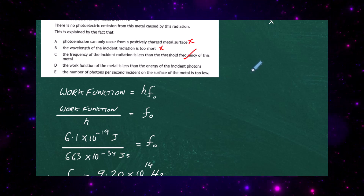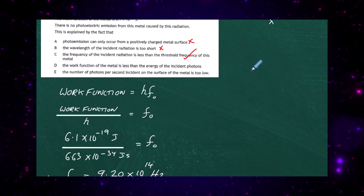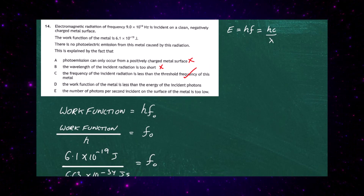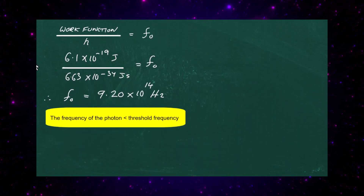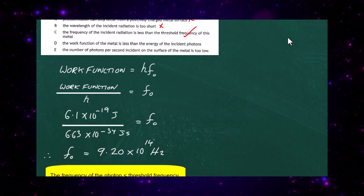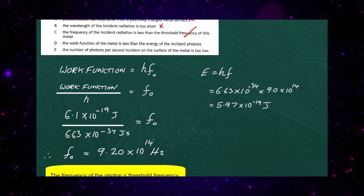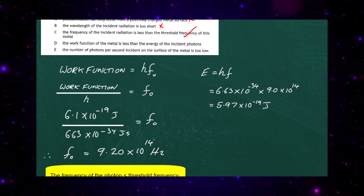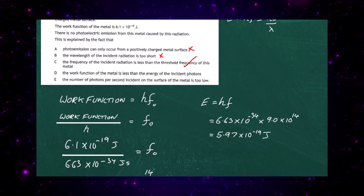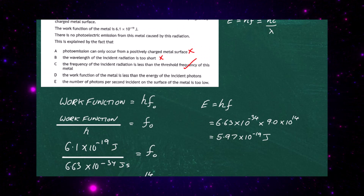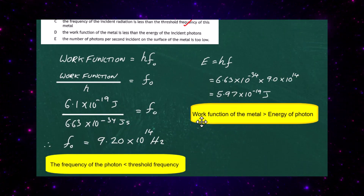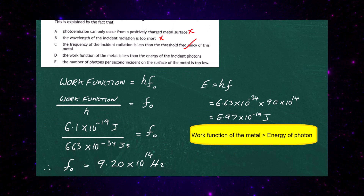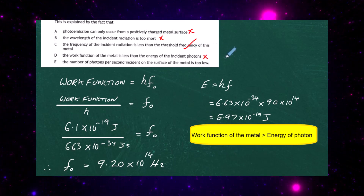Statement D says the work function of the metal is less than the energy of the incident photons. We calculate the photon energy using E = hf, giving 5.97 × 10⁻¹⁷ J. Comparing that to the work function of 6.1 × 10⁻¹⁹ J, we find the work function is actually greater than the photon energy, so statement D is false. Statement C remains our winning answer.